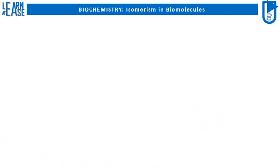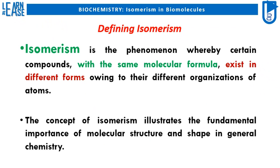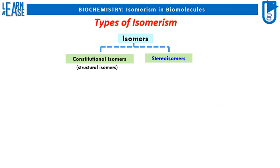Let me start the video by defining isomerism. Isomerism is the phenomenon whereby certain compounds with the same molecular formula exist in different forms owing to their different organizations of atoms. The concept of isomerism illustrates the fundamental importance of molecular structure and shape in general chemistry. The two main classes of isomers are constitutional isomers and stereoisomers.